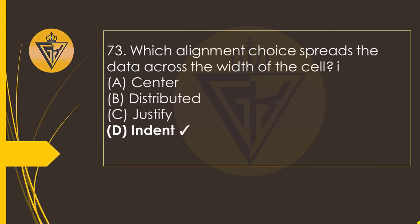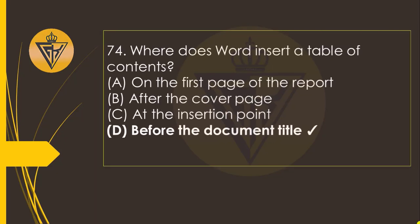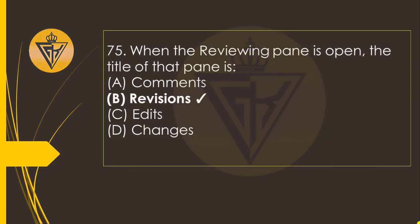Which alignment choice spreads the data across the width of the cell? The option D: Indent. Where does Word insert a table of contents? The option D: before the document lead title. When the Review pane is open, the title of that pane is the option B: Revisions.